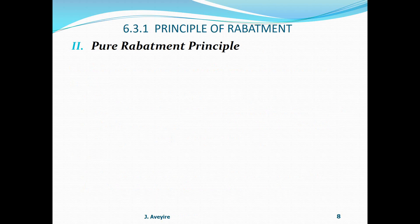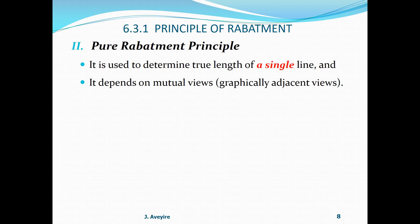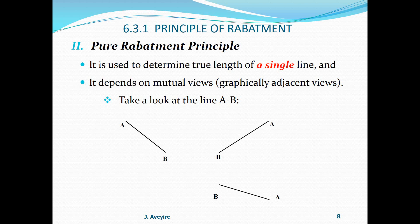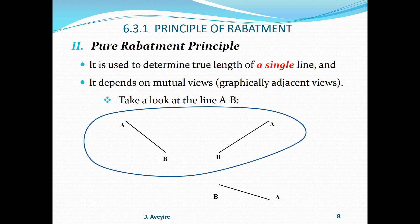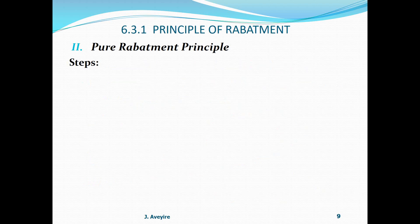Pure rabatment principle: it is used to determine the length of a single line, and it depends on mutual views — graphically adjacent views are required. For line AB, we have the front view, the right side view, and the top view. The front view and the right side view are mutual views. The front view and the top view are also mutual views, but the top view and the right side view are not mutual views.